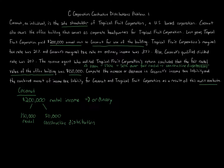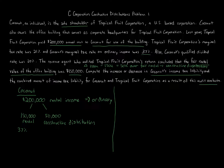Let's start with Coconut — computing the increase or decrease in Coconut's income tax liability. Coconut had $200,000 of rental income, and the taxable income to Coconut stays the same at $200,000. The difference is that under the IRS audit result, the $150,000 of rental income is subject to a 37% tax rate, and the $50,000 constructive distribution is subject to the 20% qualified dividend rate.